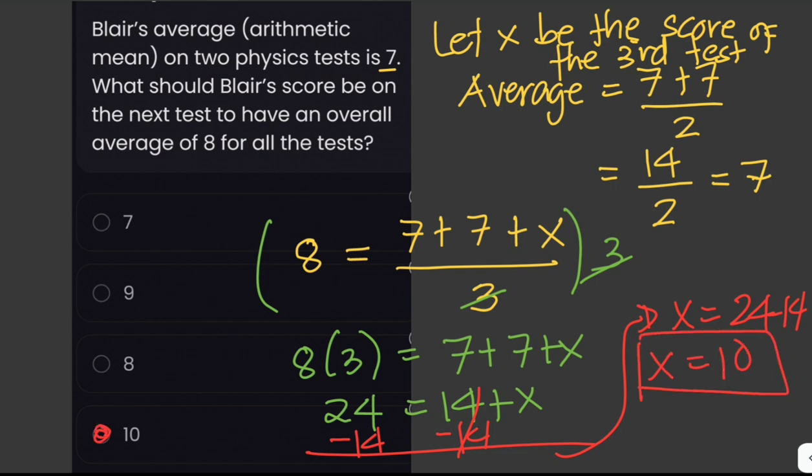Therefore the value of x is equal to 24 minus 14, which is 10. So the answer is 10 — that would be Blair's score on the next test to give her an overall average of 8 for all of the tests.